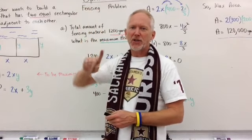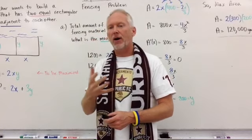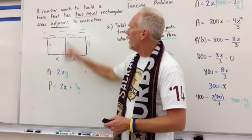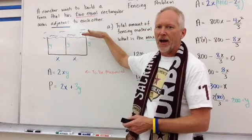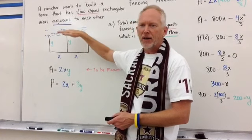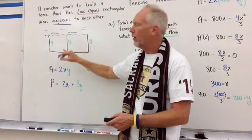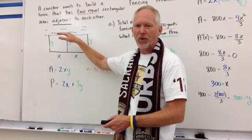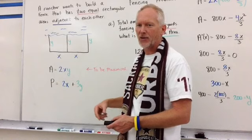Optimization fencing problem — this is part two. Before we did a fencing problem where there was fencing all the way around. Now we have a situation where a rancher wants to build a fence with two equal rectangular adjacents, but now there is a river or maybe a building — some natural border — where the animals can be corralled. We don't have to worry about building something there, so we're going to save some time and money and let nature take its course.